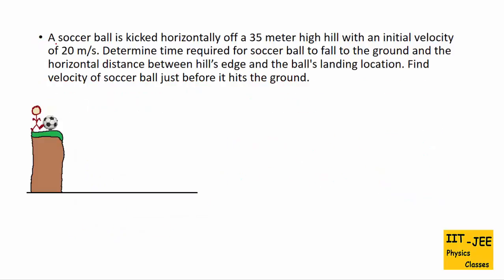Here is a practice problem. A soccer ball is kicked horizontally off a 35-meter high hill with an initial velocity of 20 meters per second. You have to find: the time required for the soccer ball to fall to the ground (the time of flight), the horizontal distance, and the final velocity of the soccer ball.